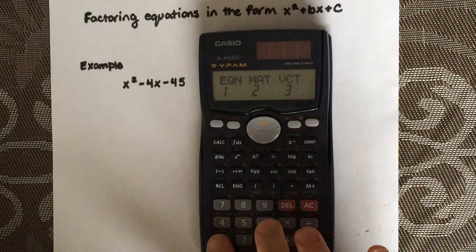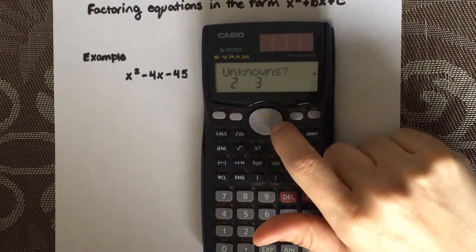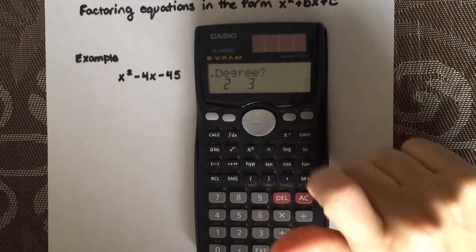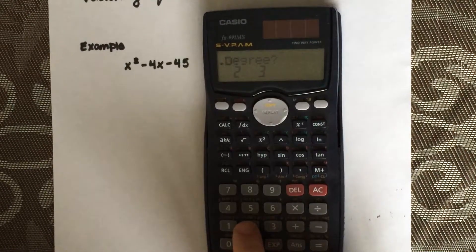You'll see equations, select 1. Here you're going to scroll to the right using the arrow key. You'll see degree, you're going to want to select 2 because it's a quadratic.